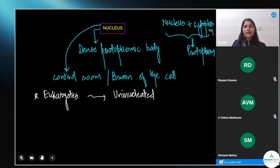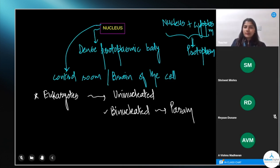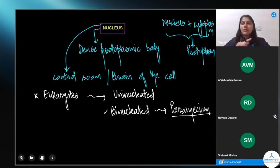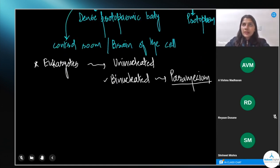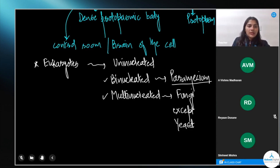Are all eukaryotes uninucleated? No — some of them are binucleated and some are multinucleated as well. Binucleated organisms have two nuclei, as in the case of Paramecium. Osteoclasts are also binucleated. There are also multinucleated individuals — for example, fungi. However, in fungi there is an exception: yeast, because yeast is a unicellular fungus. So this covers the number of nuclei present in various eukaryotes.